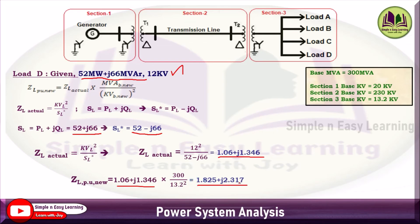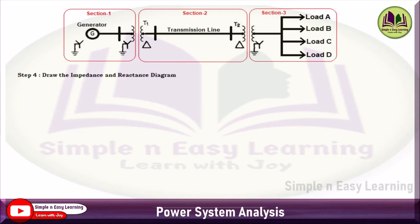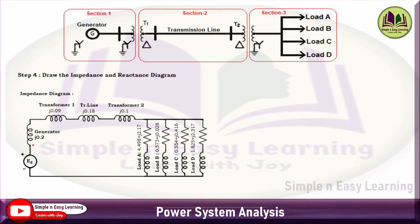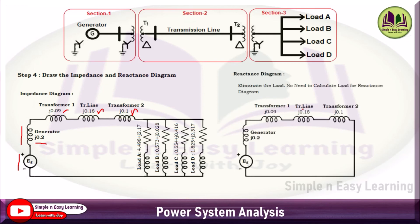Step 4: Draw the impedance and reactance diagram. For the impedance diagram, draw the generator with EMF and j0.2 pu, followed in series by Transformer 1 (j0.09), transmission line (j0.18), and Transformer 2 (j0.1). Then four loads — A, B, C, D — are connected in parallel, each with resistance and reactance. For the reactance diagram, simply eliminate the loads and represent only the generator, Transformer 1, transmission line, and Transformer 2.